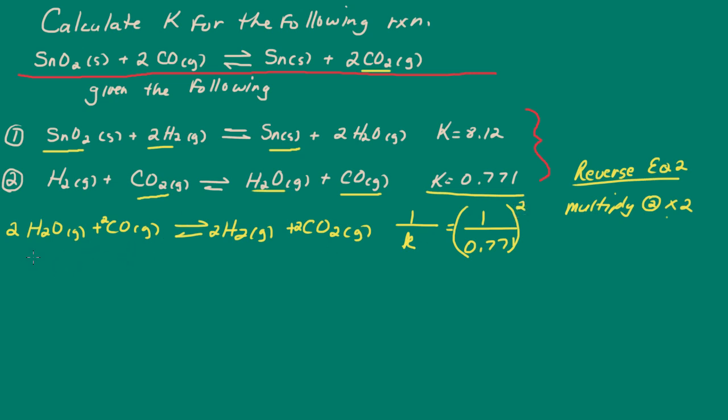Now, what I can do then, is add equations 1 and 2. So let me go ahead and write the first equation here. And that way, we can add them. And that's going to be tin plus water. And of course, K here is 8.12. It remains unchanged.